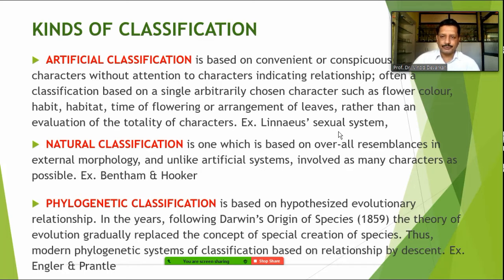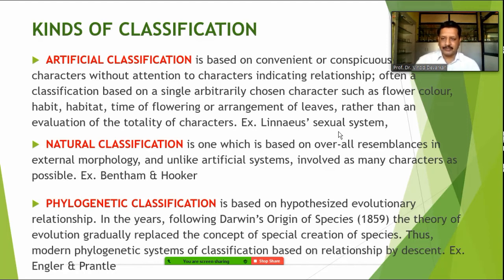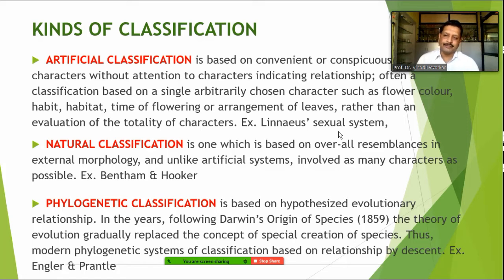Sometimes related groups may be placed into different groups, and because of that, the natural classification was gradually replaced by the phylogenetic classification system, where characters from other branches are also studied — cytology, chemistry, and anatomical characters. Whatever branches were developed to study plants, all groups of characters are considered as taxonomical characters for identification purposes.